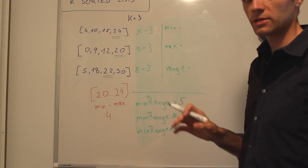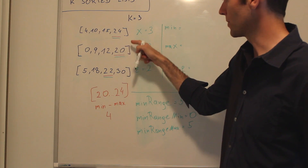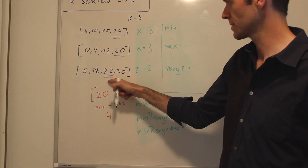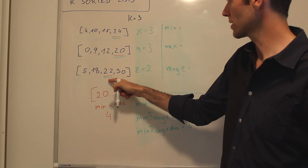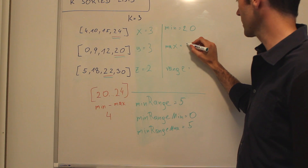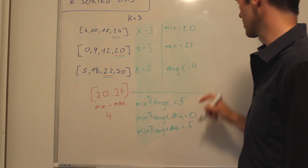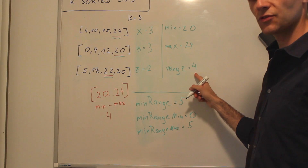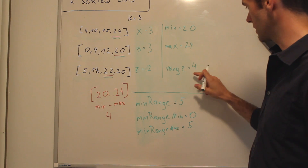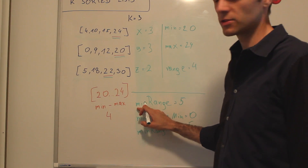Now it's getting more interesting. We arrived at a point where we are at the last element in two of the lists. We have 20, 22, and 24. The min being 20, the max being 24, and we found a range of 4. This is the first time in this complete loop that the range became smaller than the min range we found so far.